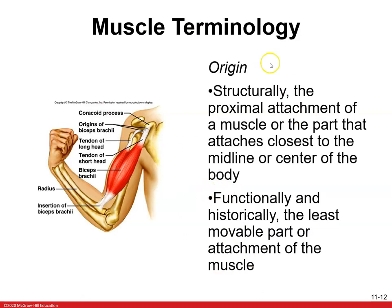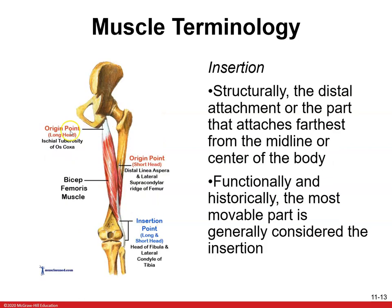When studying, the origin is structurally the proximal attachment of a muscle — the part that attaches closest to the midline or center of the body. Functionally, it's the least movable attachment — the origin stays fixed and the insertion will move towards the origin. The insertion is structurally the distal attachment — furthest from the midline. Functionally, it's the most movable part. So if you look at biceps femoris, the origin is the ischial tuberosity and the insertion is the head of the fibula. When you bend your knee, the insertion moves towards the origin.